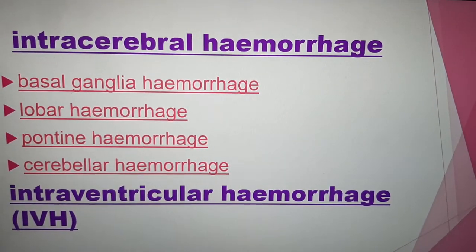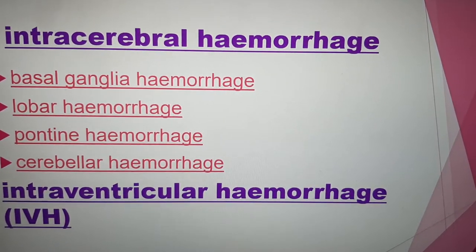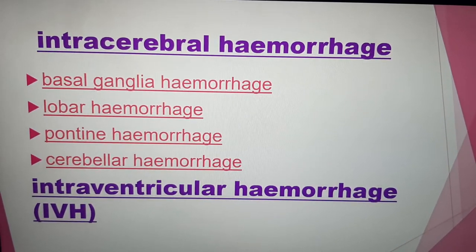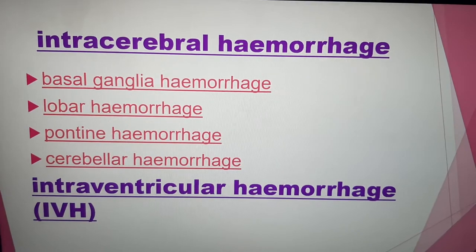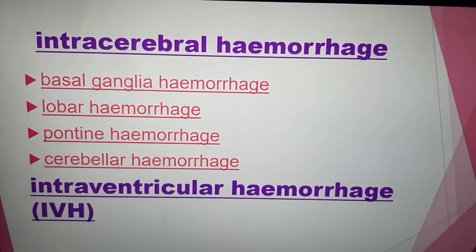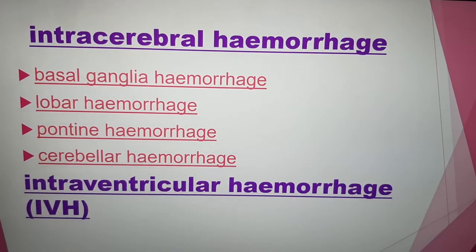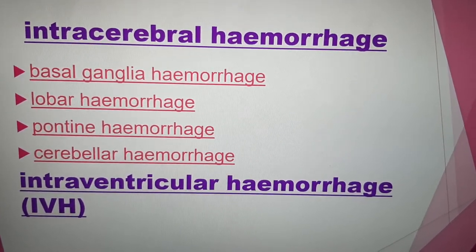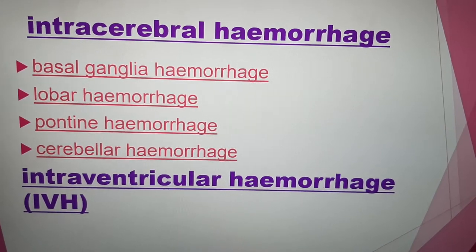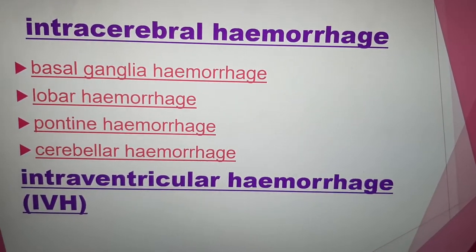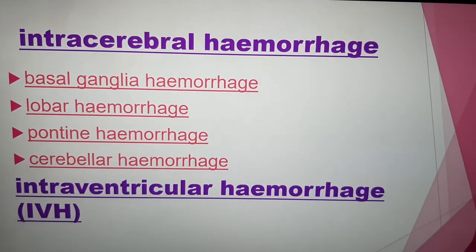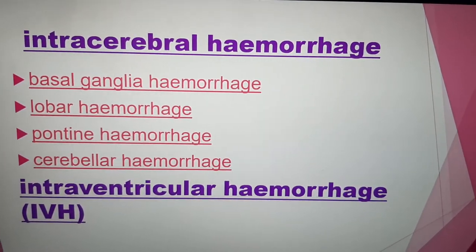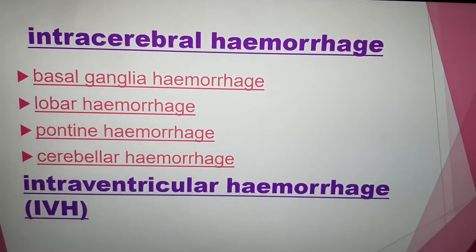Intraaxial hemorrhage has two types: intracerebral and intraventricular. Intracerebral means the hemorrhage is inside the brain itself — it can be in the basal ganglia, lobar, pontine, or cerebellar regions. Intraventricular means the hemorrhage is inside the ventricle.